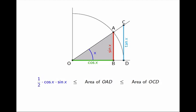Next, let's look at the big triangle. Again, the area is 1/2 of base times height. In this case, the base is 1 because that was the radius of the circle, and the height is tan(x).